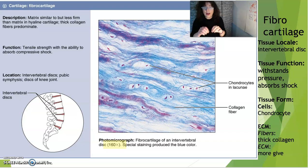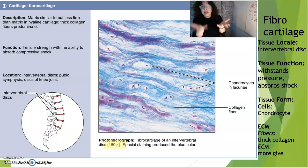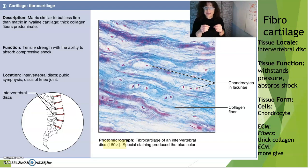For fibrocartilage, the tissue locations we'll concentrate on are the intervertebral discs of the spine, which absorb enormous pressure and shocks when you fall. Fibrocartilage in the spine compresses to protect it. You also find fibrocartilage in the pubic symphysis of women, allowing hips to expand during pregnancy and contract during childbirth, and at the discs of the knee joint, absorbing shocks from running.